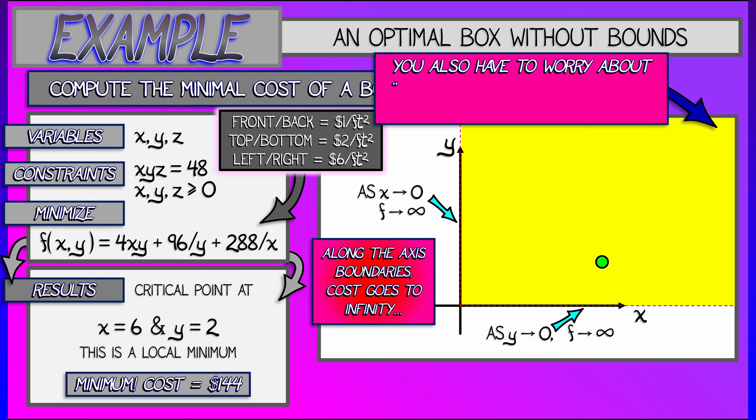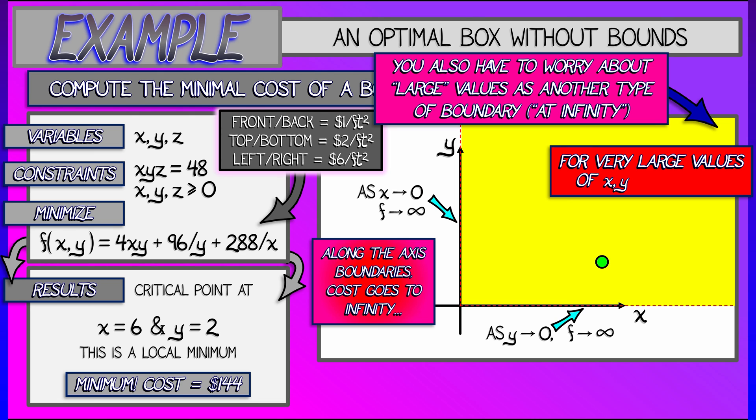You also have to worry about what happens when X and Y are both getting arbitrarily large, where they're going to infinity. Now, how do you deal with that? Well, in general, you have to take limits. It can get a little involved. Maybe it's helpful to think about a really large ball and what happens along those boundary points as the radius of that ball gets bigger and bigger.